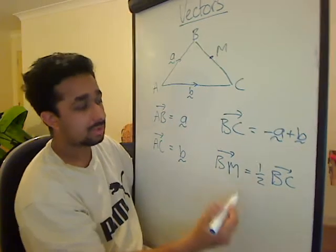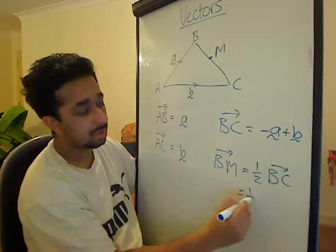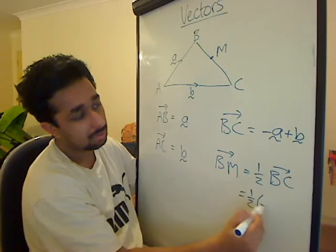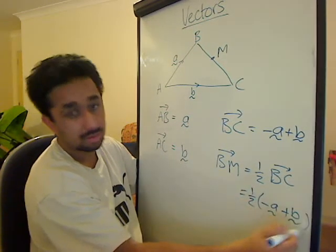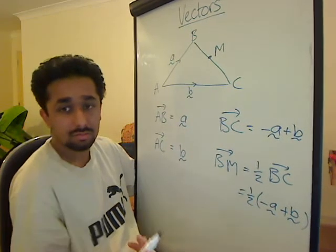So B M is half of B C. Right. And what is half of B C? That is half of this stuff here. Minus A plus B.